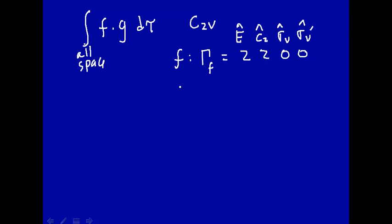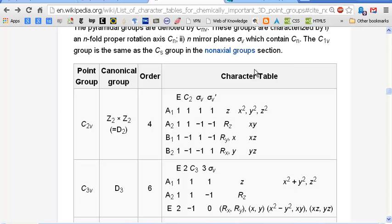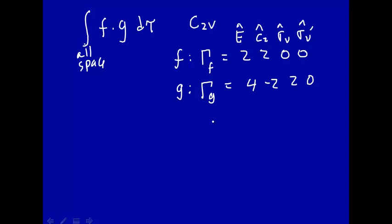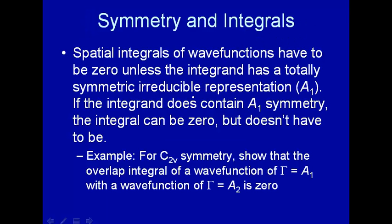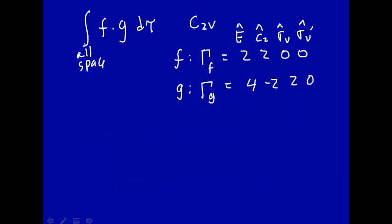And suppose for function g, that also has some symmetry given by 4, −2, 2, 0. These are representations of the f and g functions, but they are not irreducible representations — if we check the character table for C2v, we don't find any of those representations listed, so they are reducible representations. If in these reducible representations there is A1 symmetry, then the integral can be zero but doesn't have to be.